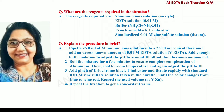Explain the procedure briefly. Pipette out 25 ml of Aluminium solution into a 250 ml conical flask. Add a known excess of 0.01 molar EDTA solution to the conical flask. Add enough buffer solution to adjust the pH to around 10. Boil the mixture for a few minutes to ensure complete complexation of Aluminium. Cool to room temperature and again adjust the pH to 10. Add a pinch of Eriochrome Black T indicator. Titrate with the standard 0.01 molar zinc sulfate solution from the burette until the color changes from blue to wine red. Record this volume as V_Zn. Repeat the titration to get a concordant value.